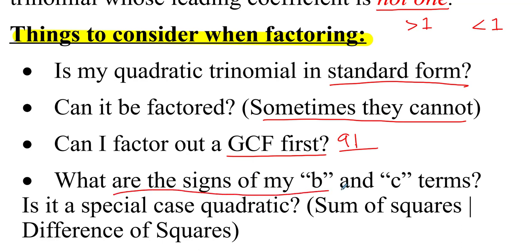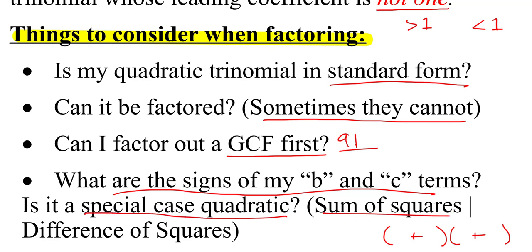And remember, we look at the signs of the B and C terms. That kind of helps us understand at the end — are we looking at a plus-plus or a plus-minus? And then we might have some special case quadratics: sum of squares, difference of squares. Those are from 9.2, so you're going to need to remember what these look like.